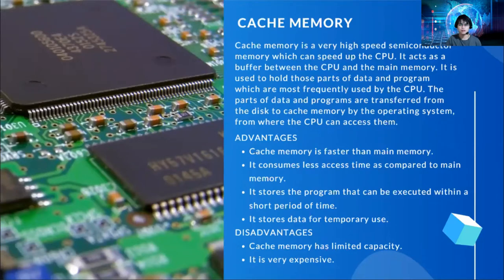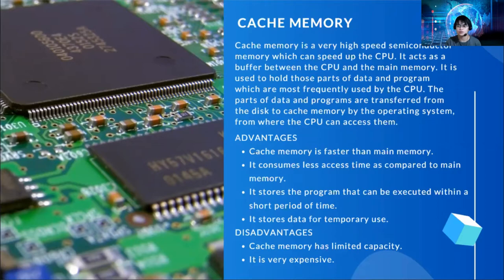First, we have cache memory. Cache memory is a very high speed semiconductor memory which can speed up the CPU. It acts as the buffer between the CPU and the main memory. It is used to hold those parts of data and programs which are most frequently used by the CPU. The parts of data and programs are transferred from the disk to cache memory by the operating system, from where the CPU can access them.